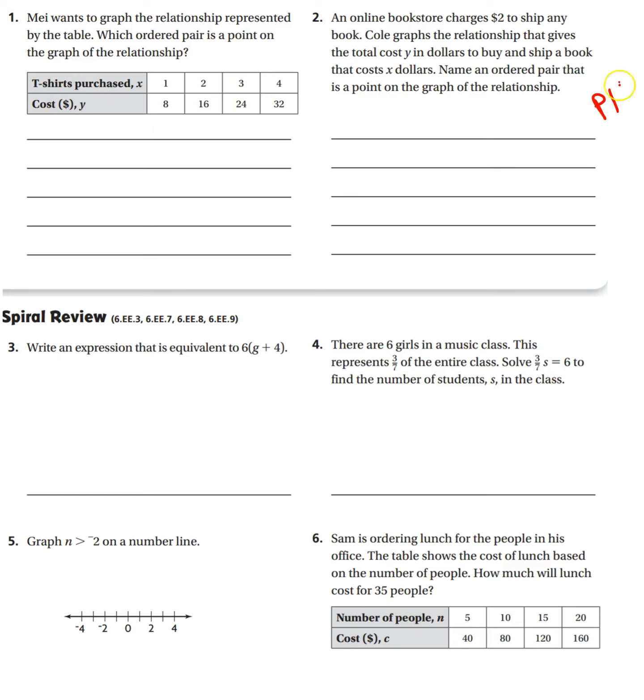Alright, now I'm on page P160, the GoMath homework. Let's take a look. It says, May wants to graph the relationship represented by the table. Which ordered pair is a point on the graph of the relationship? So these directions are the most confusing part about this problem. What they're really asking is take these numbers and write them as an ordered pair.